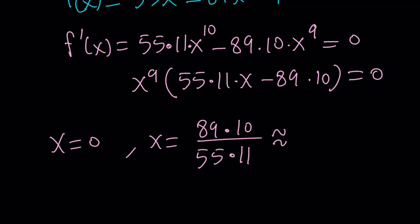The other one is going to be 89 times 10 divided by 55 times 11. That number is approximately 1.47. And you got to be careful because this number is less than 1 plus root 5 over 2. That's going to be very important. So what happens here? We have two extrema, one at 0, one at 1.47-ish.